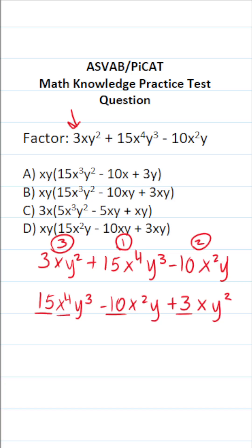That said, if we look at x and y, we can see that each of these terms has x and y. So I'm going to factor out an x and a y. This becomes xy times 15x to the third y squared minus 10x plus 3y.